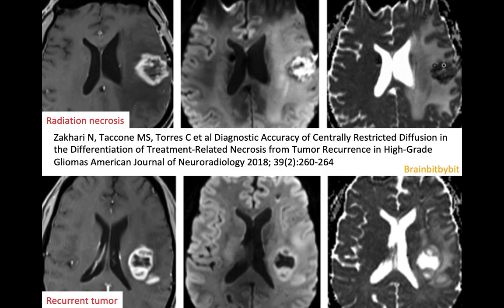This is a study done in patients with high-grade glioma that had not been treated with bevacizumab, because bevacizumab influences VEGF, and VEGF plays a role in the pathogenesis of radiation necrosis. In radiation necrosis, there is restricted diffusion in the necrotic part, whereas in a high-grade recurrent glioma, there is facilitated diffusion.